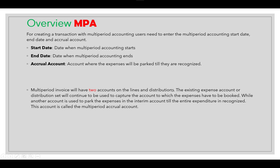The existing expense account or distribution set will continue to be used to capture the account to which the expense has to be booked, while another account is used to park the expense in an interim account until the entire expenditure is recognized. This account is called the multi-period accrual account.